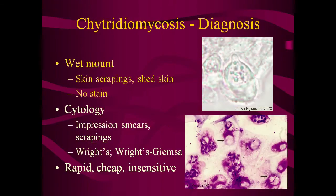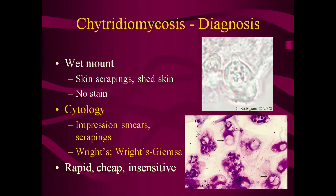Antemortem diagnosis may be possible with cytologic examinations of skin scrapings or shed skin. An unstained wet mount of scrapings may reveal the characteristic thalli of this fungus. Cytology of skin impression smears or scrapings, stained with typical hematology stains such as Wright stain, may also reveal the thalli within the skin cells. Both of these techniques are rapid and can be done in most basic veterinary labs, but neither is very sensitive.